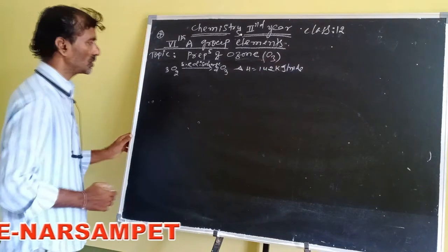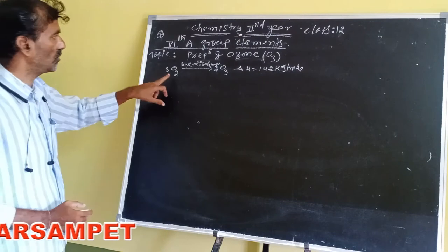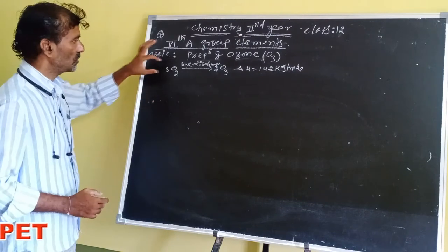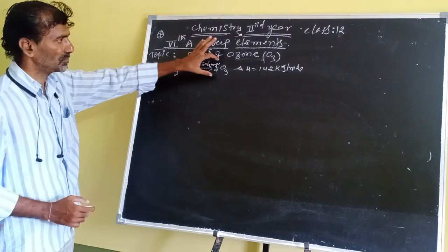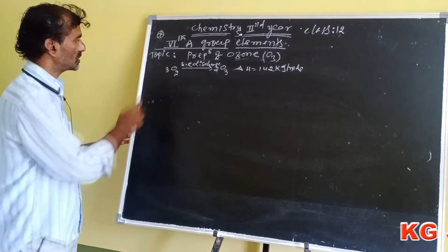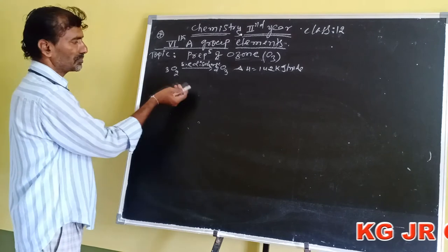The formation of O₃ is an endothermic reaction where ΔH equals 142 kilojoules per mole. Next, we look at the properties of ozone.